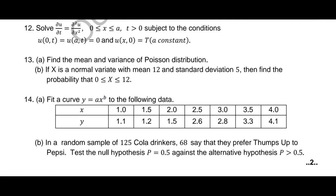Question 13a asks to find the mean and variance of the Poisson distribution. I've already told you — the mean, variance, and moment generating function of all five distributions: binomial, Poisson, exponential, uniform, and normal distributions. All five distributions' mean, variance, and MGF are compulsory to practice. Those proofs are already explained in the videos and in class.